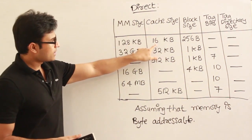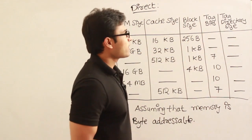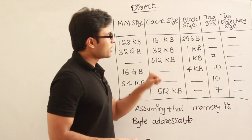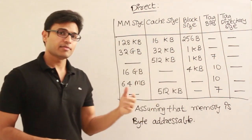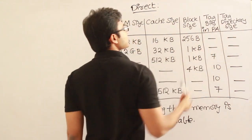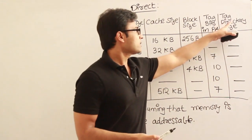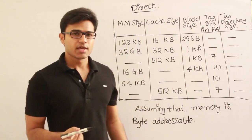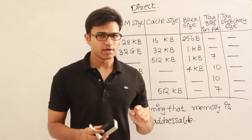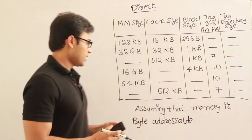They are asking for the number of tag bits in the physical address and the tag directory size. Tag bits in the physical address means how many bits in the physical address are used for the tag. Tag directory size means every line of the cache has some tag bits, and all those tag bits added together form the tag directory.